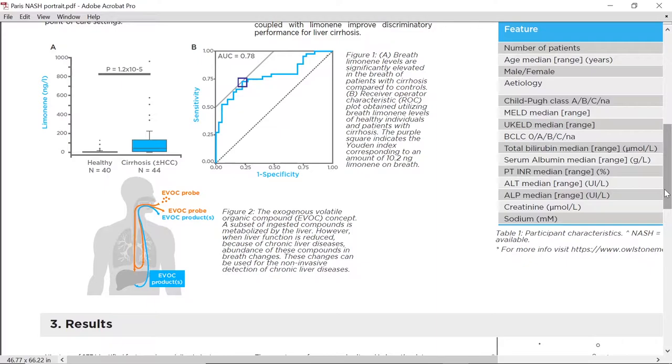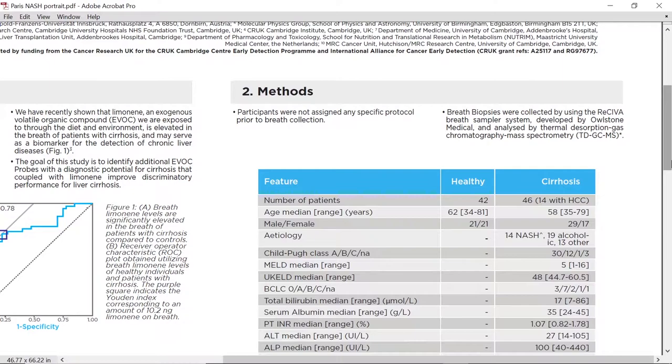In general, as illustrated in Figure 2, similarly to limonin, several different dietary compounds could be used as exogenous volatile organic compounds, or EVOCs in short, for detection of liver cirrhosis through a breath test. The goal of this study is to identify additional EVOCs that, coupled with limonin, increase diagnostic performance of a breath test for cirrhosis.